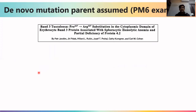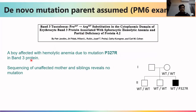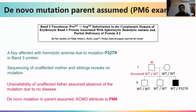For a PM6 example (assumed de novo), a boy with hemolytic anemia had mutation P327R in BN3 protein. Sanger sequencing was performed for the mother and sibling, and neither carried the mutation. However, due to unavailability of the father's sample, they assumed based on clinical and family history that the father also does not carry the variant. Because de novo status was assumed rather than confirmed, P327R is marked as PM6.